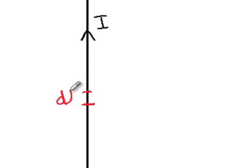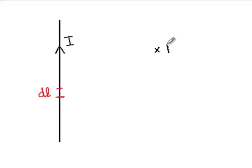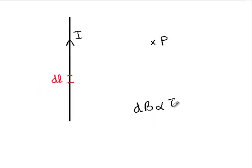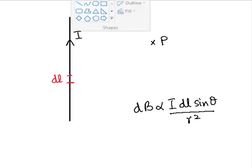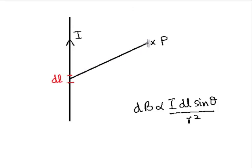And the length of this portion is dl. We want to find the magnetic field at a point P over here which is at a certain perpendicular distance from the wire. But in the expression that we have, which is dB proportional to I dl sin theta over r squared, here r is this distance, the distance between the current element and the point P. r is this distance.